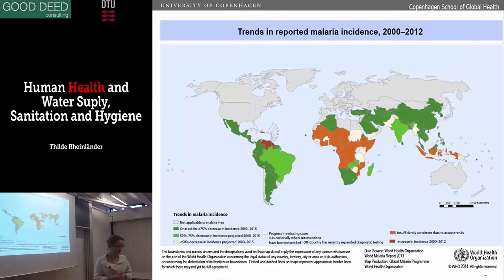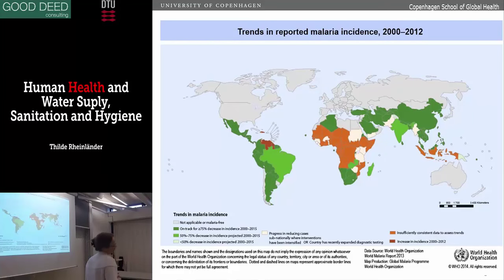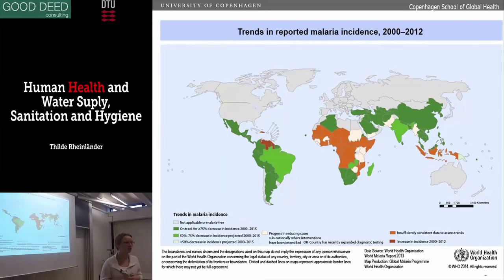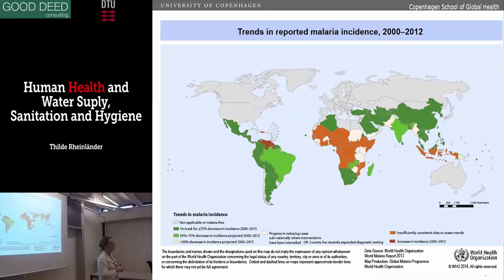Sick people are also at high risk, because they have a poor immune system already. Malaria is actually one of those diseases that you can kind of develop an immunity towards. Some of my Ghanaian colleagues still get malaria once a year, but it's just like a flu for a week and then they're over it — they've been exposed so many times. Whereas I would fall deathly sick if I got malaria.